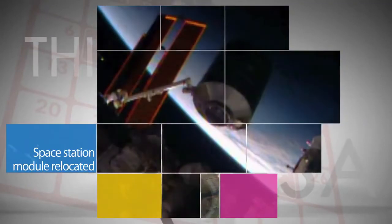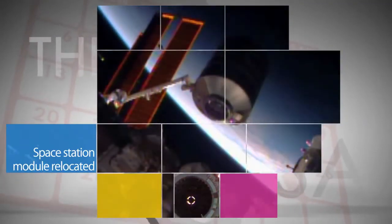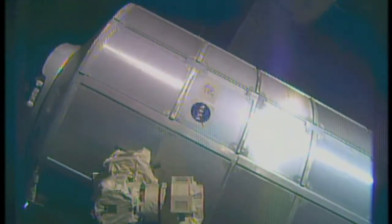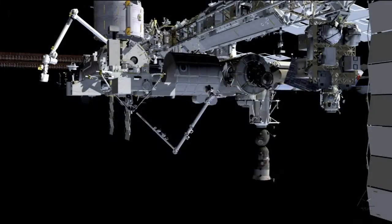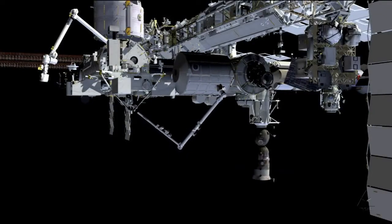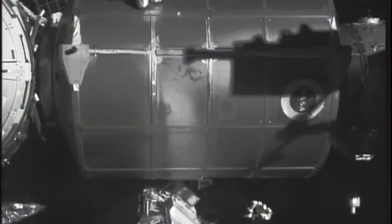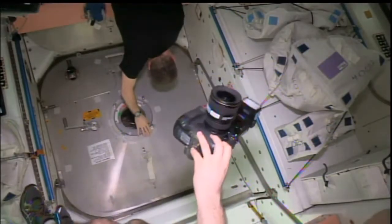Work was completed on May 27 to relocate the International Space Station's permanent multipurpose module from the Earth-facing port of the Unity module to the forward port of the Tranquility module. The module move is part of the process of reconfiguring the station for the future arrival of U.S. Commercial Crew spacecraft.